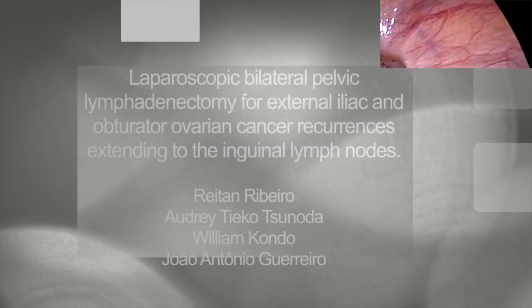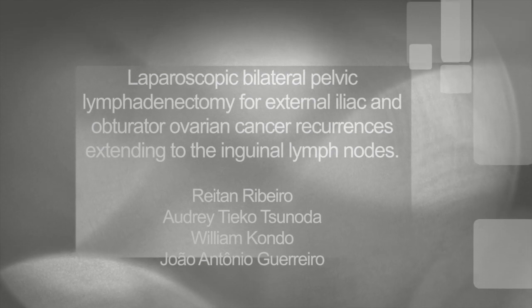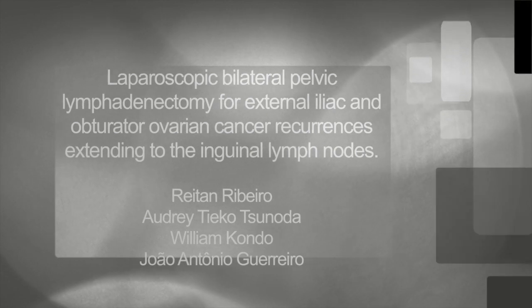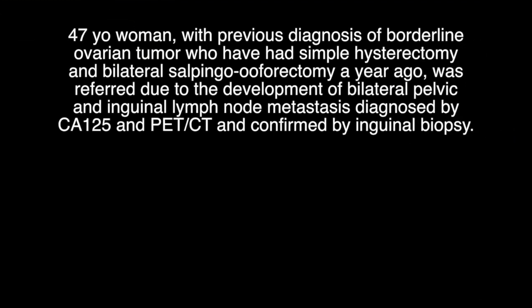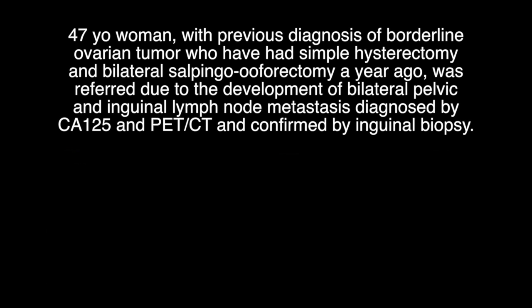Laparoscopic bilateral pelvic lymphadenectomy for external iliac and obturator ovarian cancer recurrences extending to the inguinal lymph nodes. A 47-year-old woman with a previous diagnosis of borderline ovarian tumor who had a simple hysterectomy and bilateral salpingo-oophorectomy a year ago was referred due to increased bilateral pelvic and inguinal lymph node metastasis, diagnosed by CA-125 and PET-CT and confirmed by inguinal biopsy.